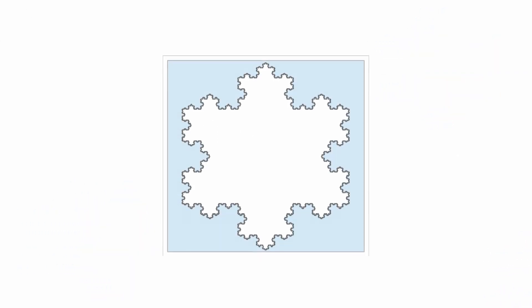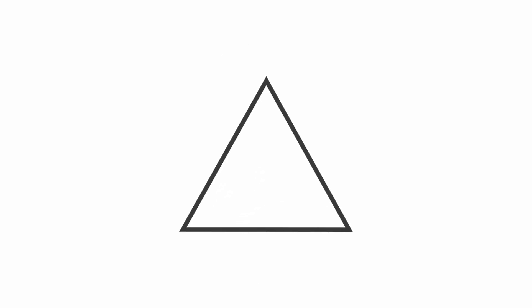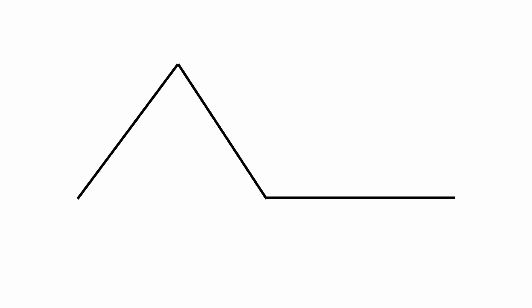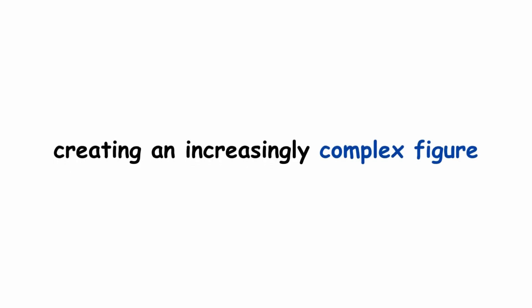Another well-known fractal is the Koch Snowflake. This fractal is built iteratively, starting with an equilateral triangle. At each step of the iteration, each side of the triangle is cut away and replaced by a new set of three line segments that form a peak. This process is repeated infinitely, creating an increasingly complex figure.